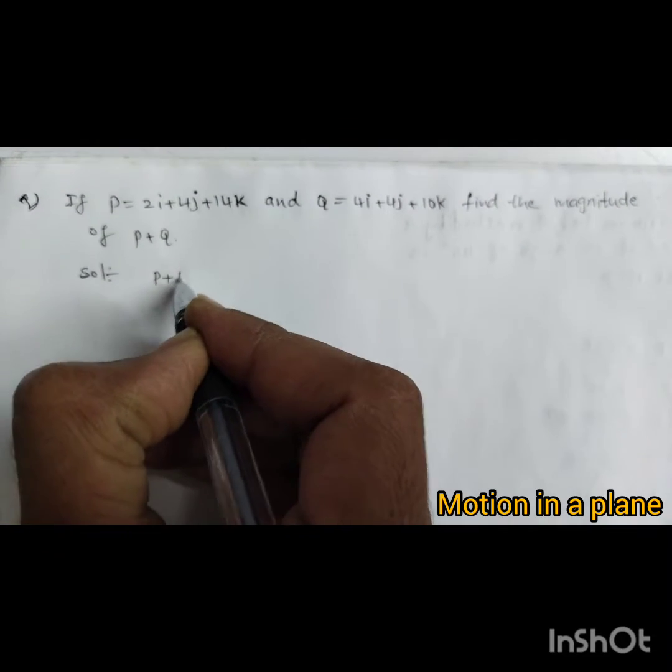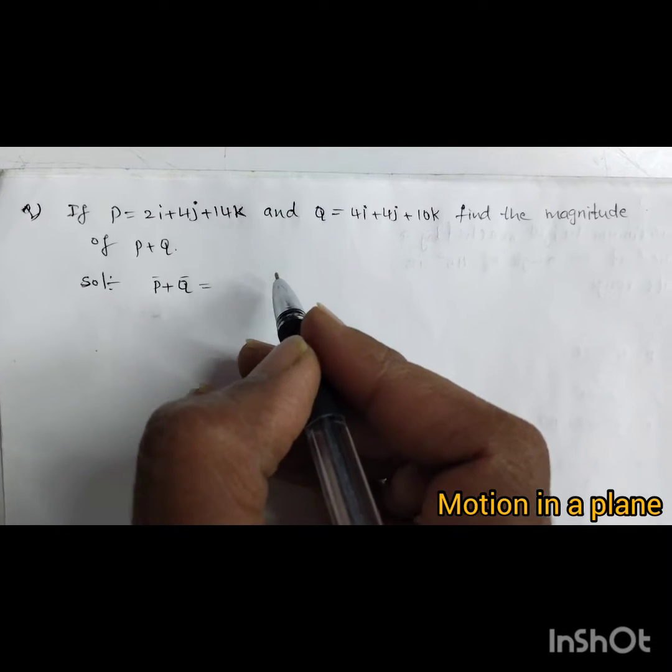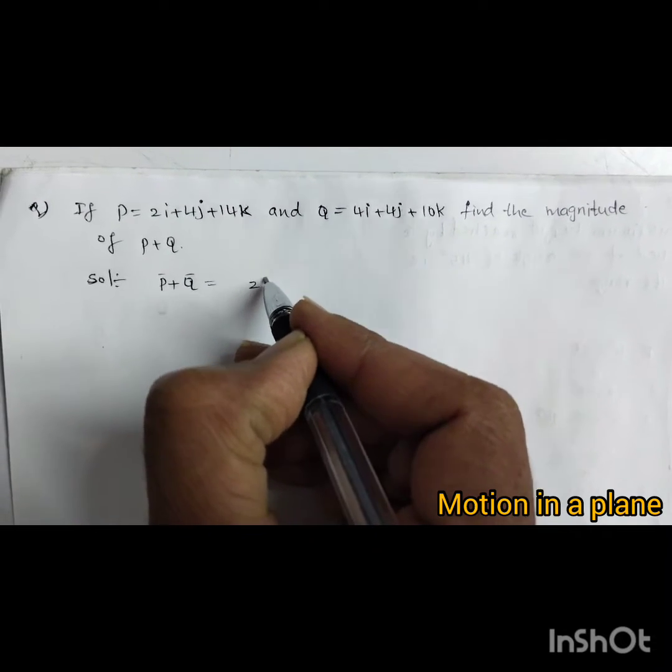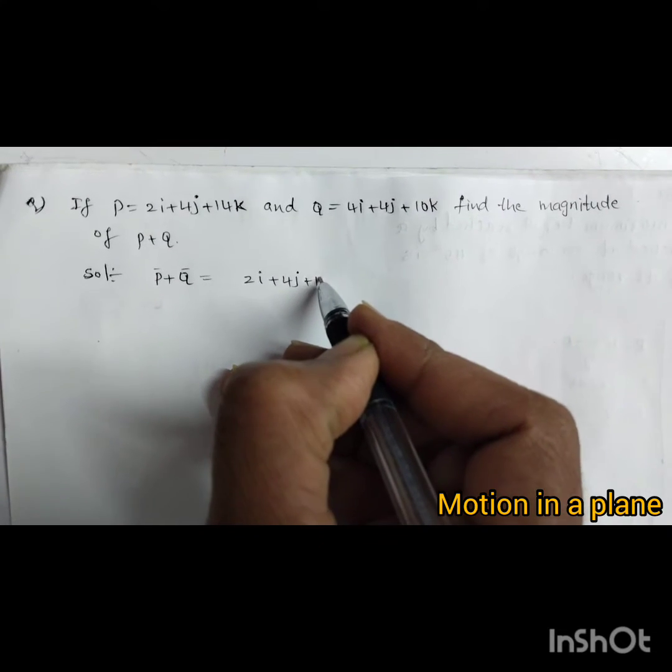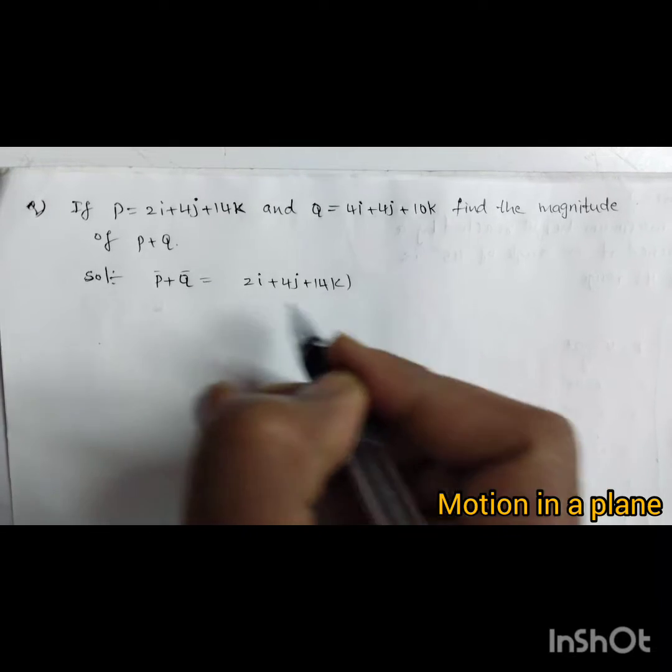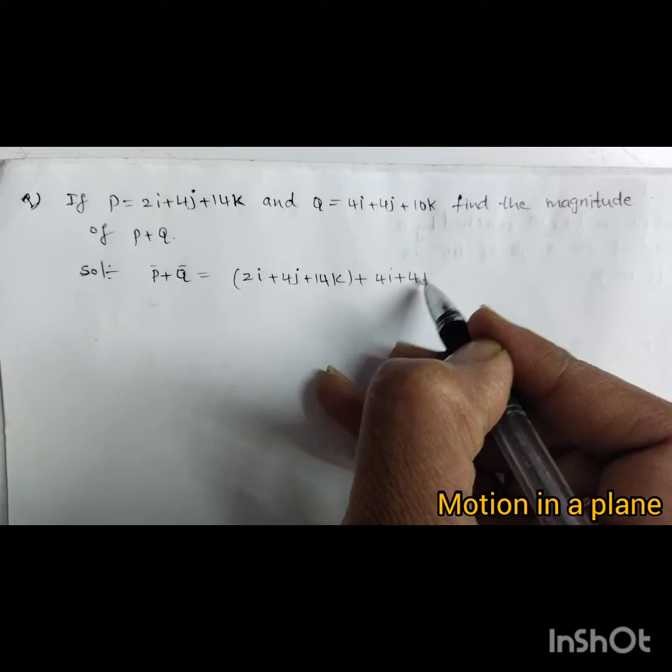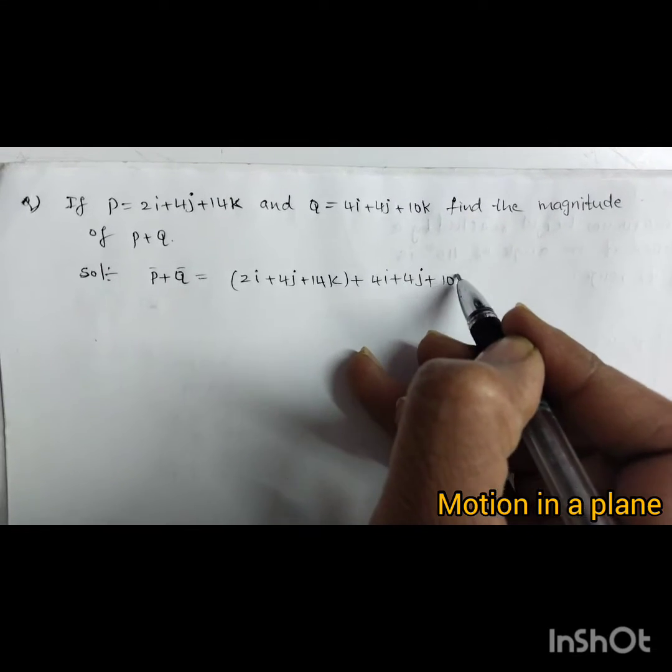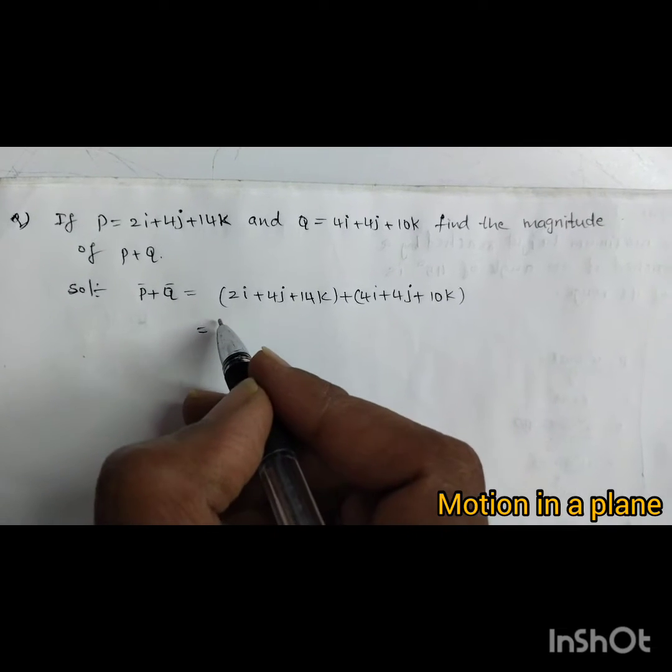P plus q equals the addition of these two vectors: 2i plus 4j plus 14k plus 4i plus 4j plus 10k. So just addition.